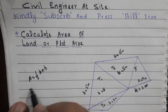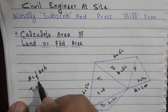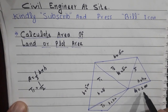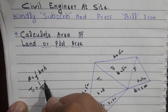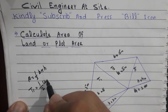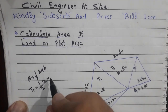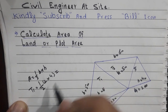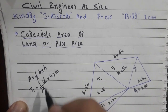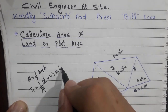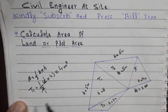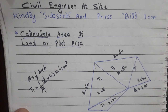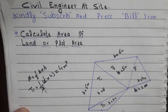Triangle number one: the base is 2 meters and the height is 4 meters. Area = (2 × 4) / 2 = 8 / 2 = 4 meters squared. So the area of triangle number one is 4 m².